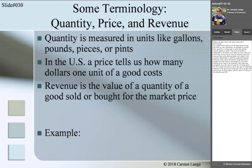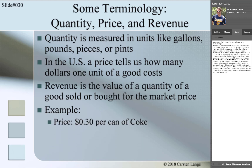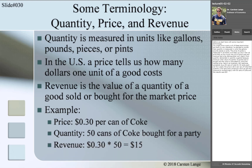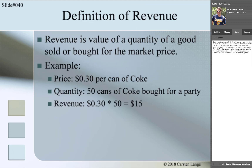Here is an example. Let's assume somebody buys 50 cans of Coke for 30 cents each for a party. The price is 0.3 dollars per can of Coke, and the quantity is 50 cans. The revenue is 15 dollars, calculated by multiplying 0.3 dollars by 50 cans. Based on this example, it should be easy to find the formula for revenue: price times quantity equals revenue.